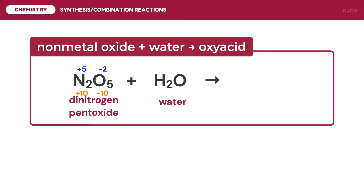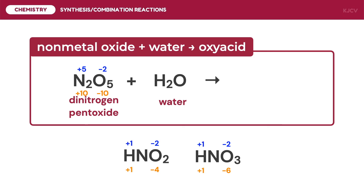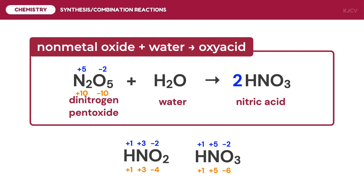The oxy acids associated with nitrogen are nitrous acid and nitric acid. For nitrous acid, oxygen gives a subtotal of negative 4 and hydrogen positive 1, so nitrogen is positive 3. For nitric acid, nitrogen is positive 5. Since nitrogen in the non-metal oxide is positive 5, the product is nitric acid. The final balanced reaction is 1 mole of dinitrogen pentoxide reacting with 1 mole of water to produce 2 moles of nitric acid.